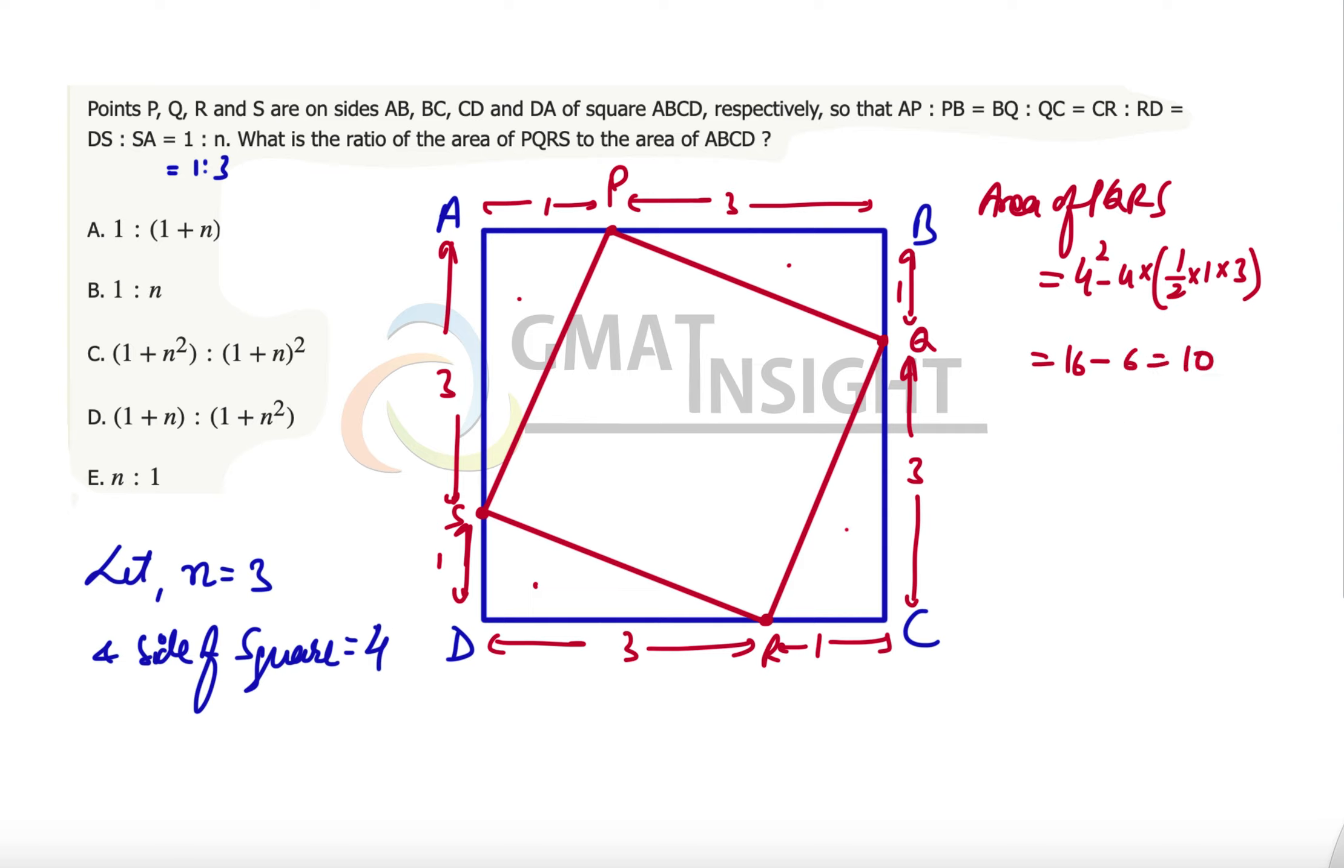So area of PQRS is 10 while the area of ABCD is equal to 4 squared, that is 16. So the required ratio of areas will be equal to 10 over 16, that will be equal to 5 over 8. So now the correct option, on substituting the value of n equals 3, should give us the answer 5 over 8.